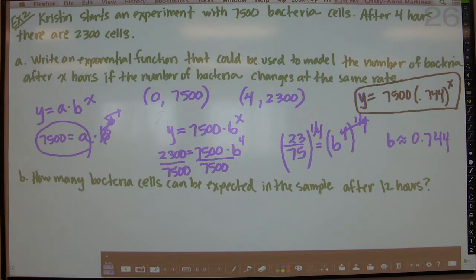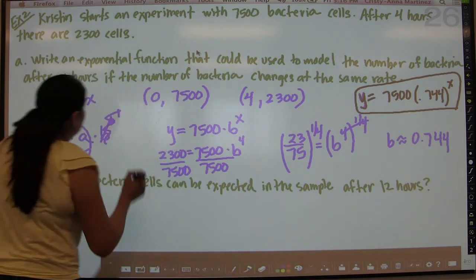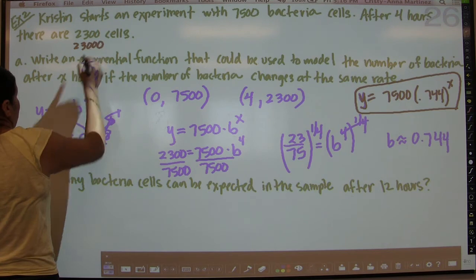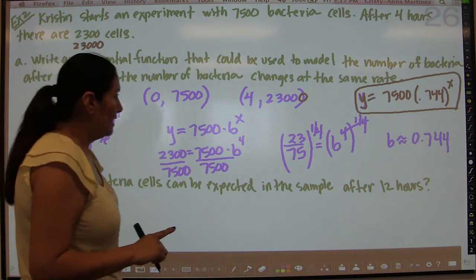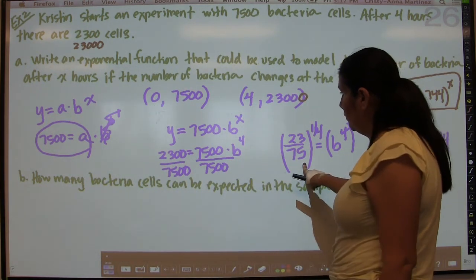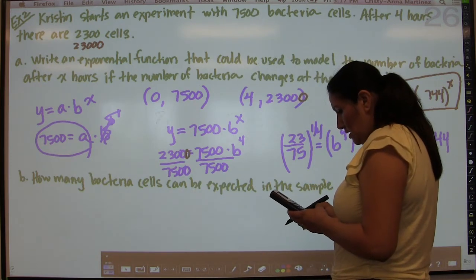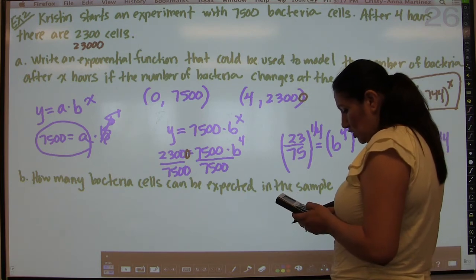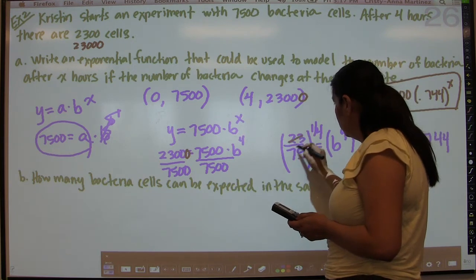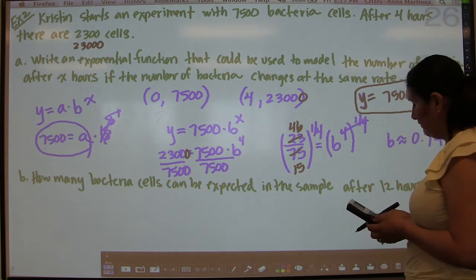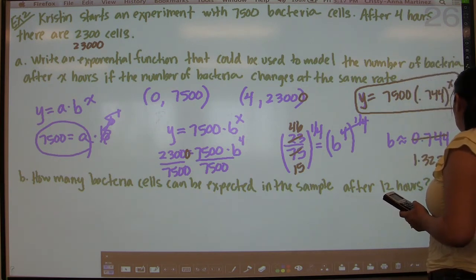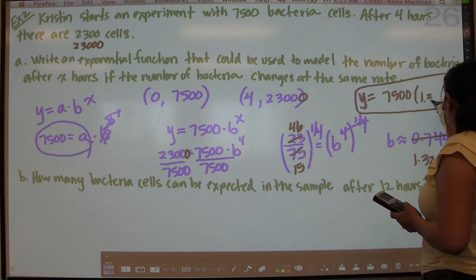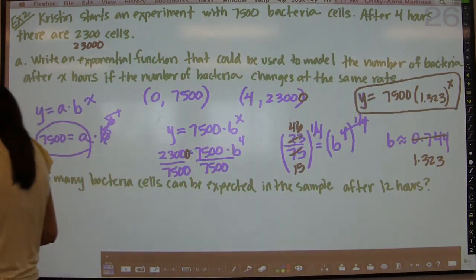I just noticed a little bit of a mistake. Originally this problem should have said 23,000. I forgot a 0. So this should be 23,000, which is going to affect our value here because instead of putting 2,300, it's going to be 23,000. So 23,000 divided by 7,500 is actually 46/15ths. I really apologize for this. And then 46/15ths to the 1/4th power is going to be 1.323. So our value is 1.323 to the x. So 7,500 times 1.323 to the x power.